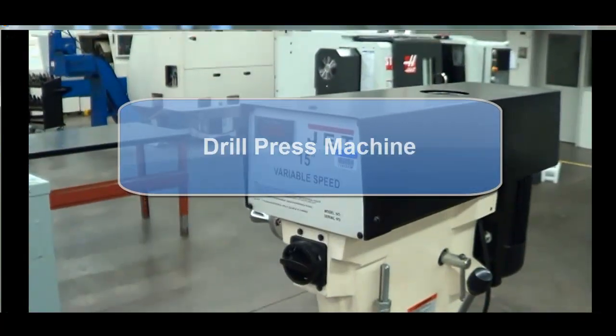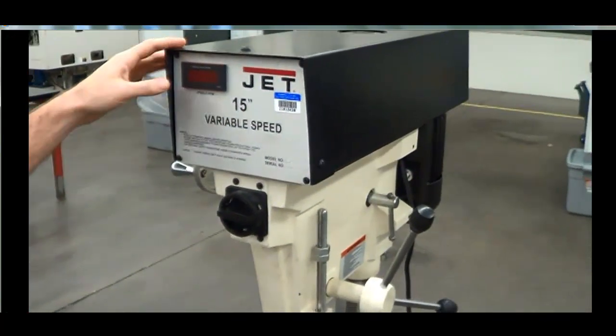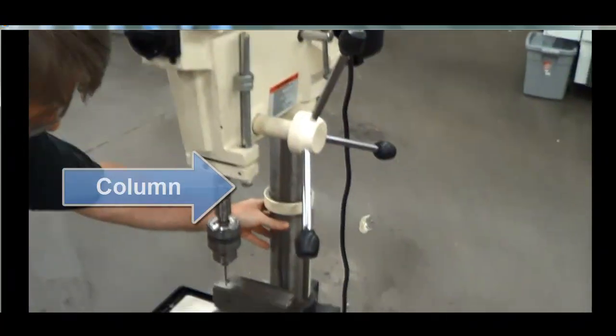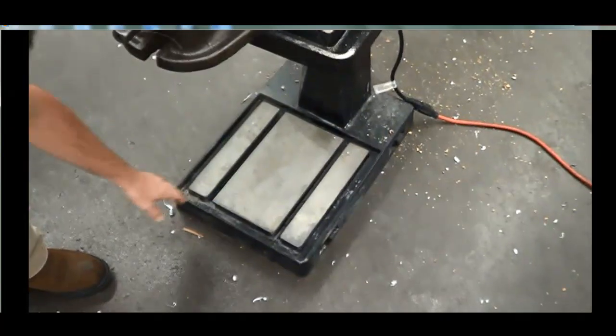This is the upright drill press. The main components of the upright drill press are the head, the column, the work table, and the base.